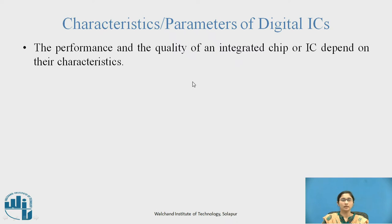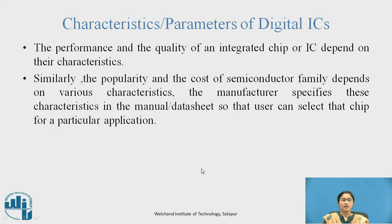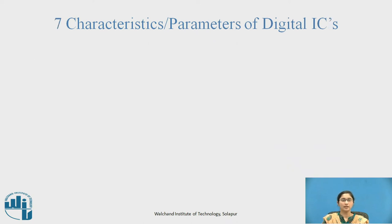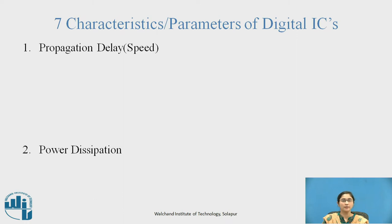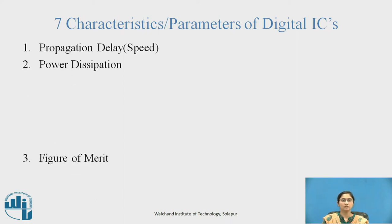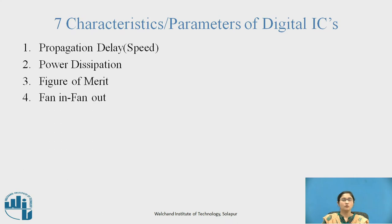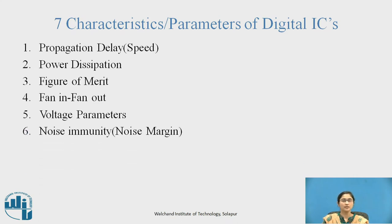Parameters of digital ICs. The performance and quality of an integrated chip depend on their characteristics. Similarly, the popularity and cost of a semiconductor family depend on various characteristics. The manufacturer specifies these characteristics in a manual or data sheet so that the user can select the chip for a particular application. There are seven characteristics: propagation delay (speed of operation), power dissipation, figure of merit, fan in and fan out, voltage parameters, noise immunity or noise margin, and operating temperature.